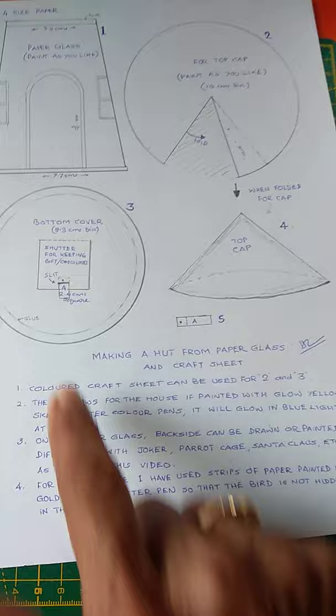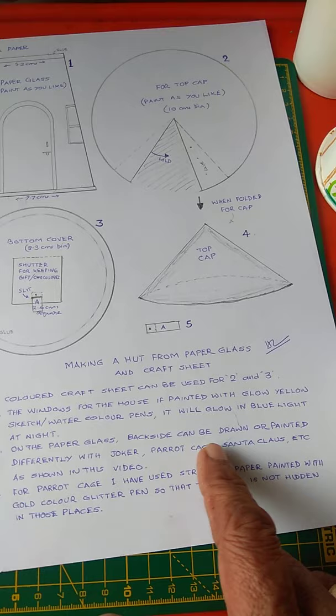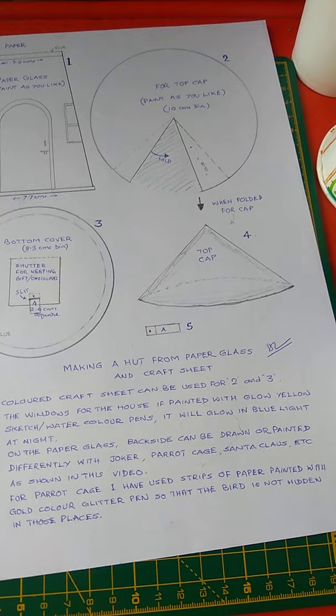Colored sheet, craft sheet can be used for these two circles. And this is a very simple thing to be done. On the paper glass back side, can be drawn or painted different.